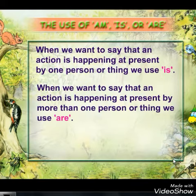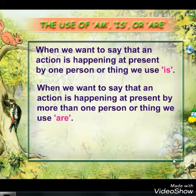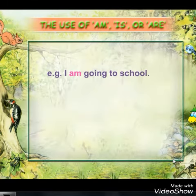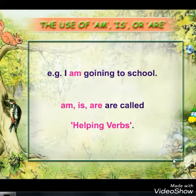When we want to say that an action is happening at present by more than one person or thing, we use are. Am is used with I. For example, I am going to school. Am, is, and are are called as helping verbs.